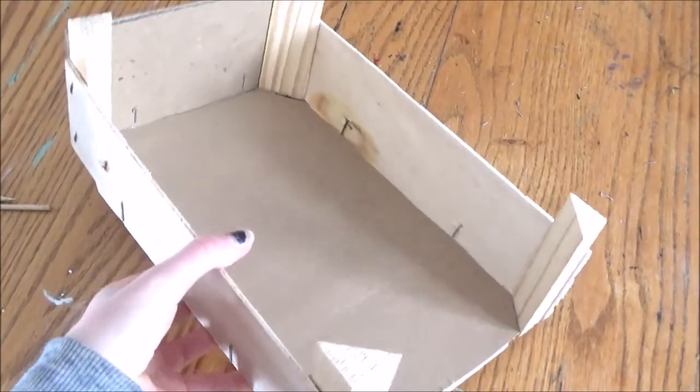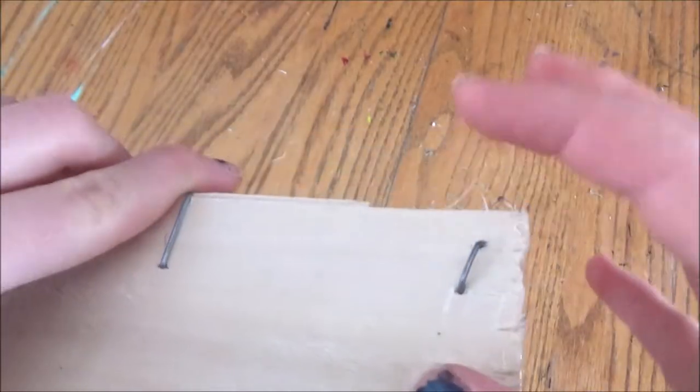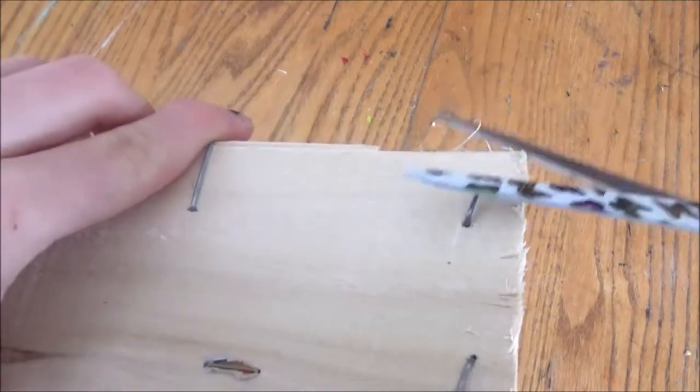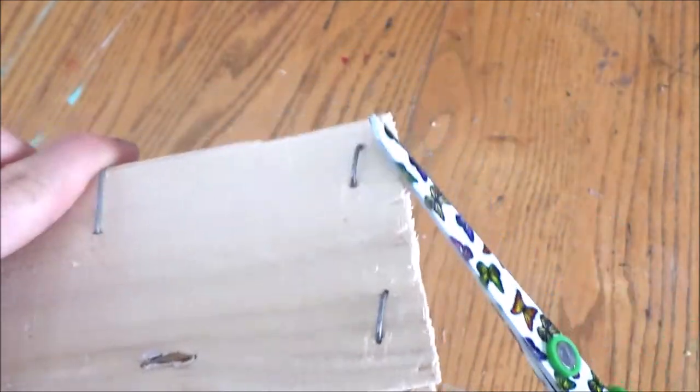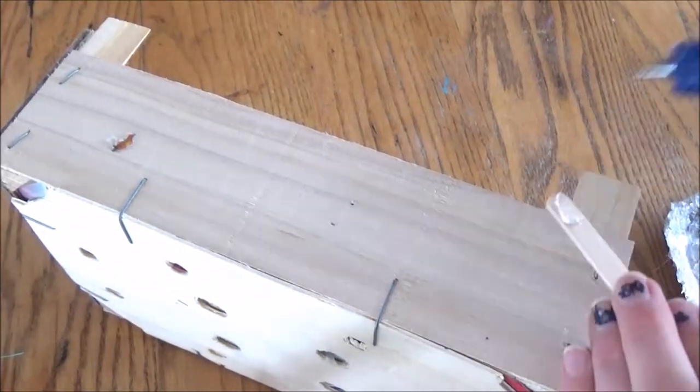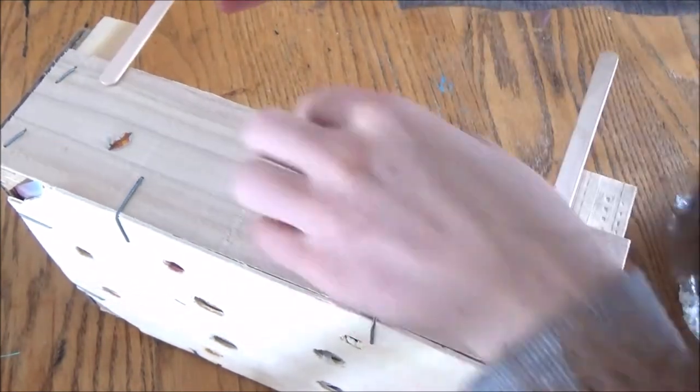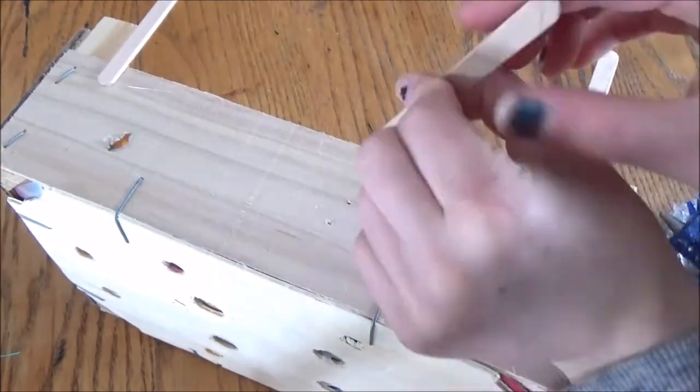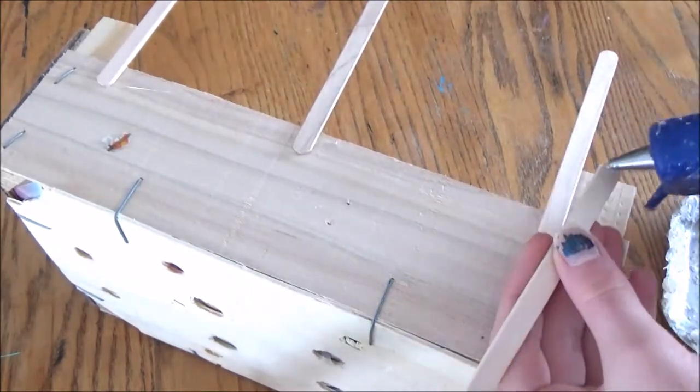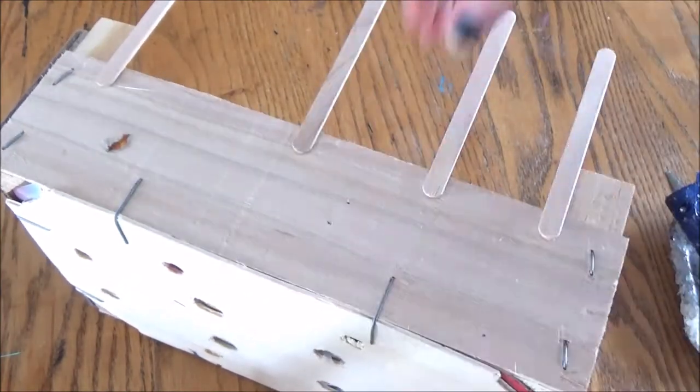And if you have any type of splinter or flyaways from the wood you can trim those off and you might even want to sand them. Then you're going to start gluing popsicle sticks around the side of the crate. So on the long side you can see I'm gluing two at the sides, one in the middle and then one in between each of those pieces.